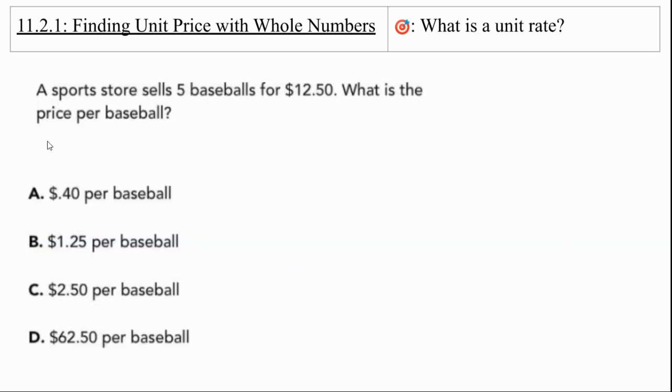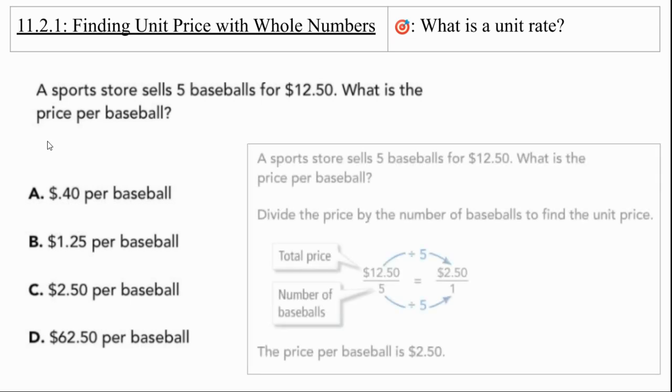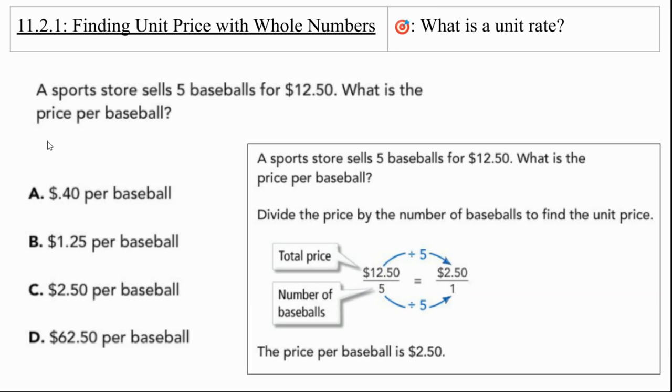This is a practice problem for you. So make sure that you do this one in your notes before you check the next part of the video. You can pause here. A sports store sells five baseballs for $12.50. What is the price per baseball? So remember, if you were making a table for this, you would do the price first and the quantity of baseballs. So you could do the price divided by the number of baseballs. So we could do price over the number of baseballs in a ratio, divide both by the number of baseballs, and we get the unit price, which is $2.50 per baseball.